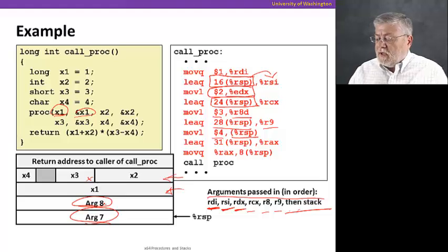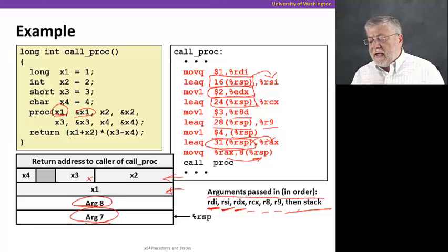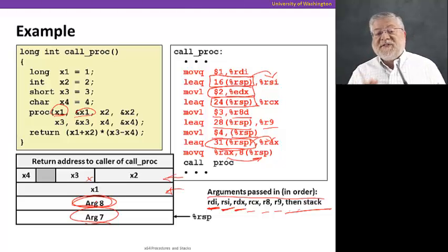The last argument, argument eight, is the address of X4. The address of X4 can be computed by doing 31 plus the RSP. We're gonna put that in RAX temporarily, just so that we can then move it to eight plus the RSP, the slot for the eighth argument. So now we've set up all eight arguments, six in registers, two on the stack. And we're ready to call proc.